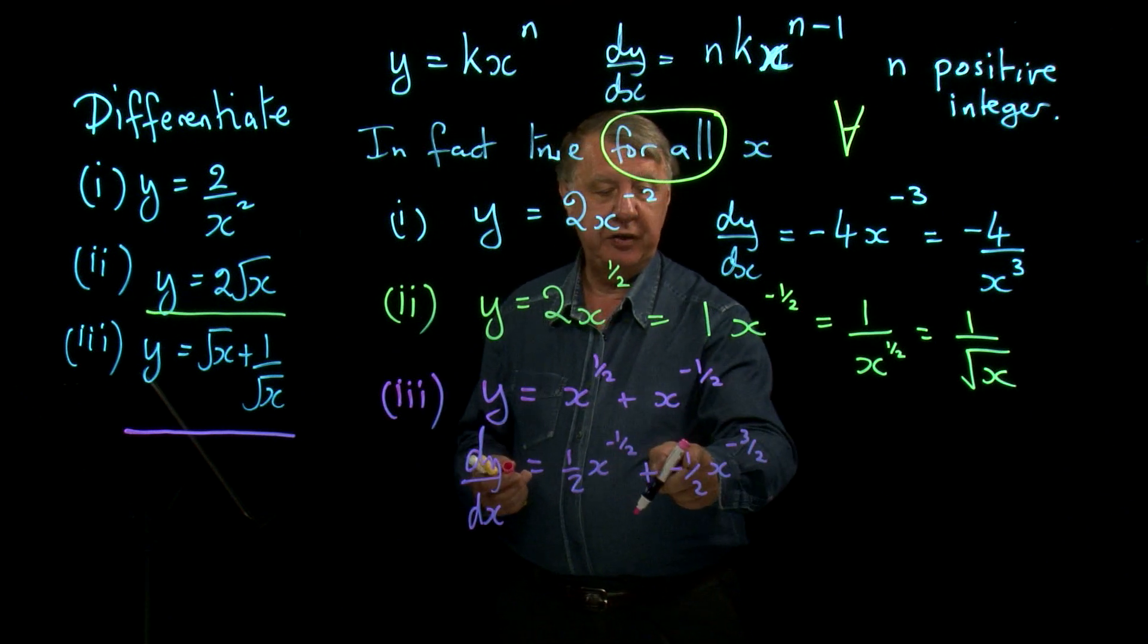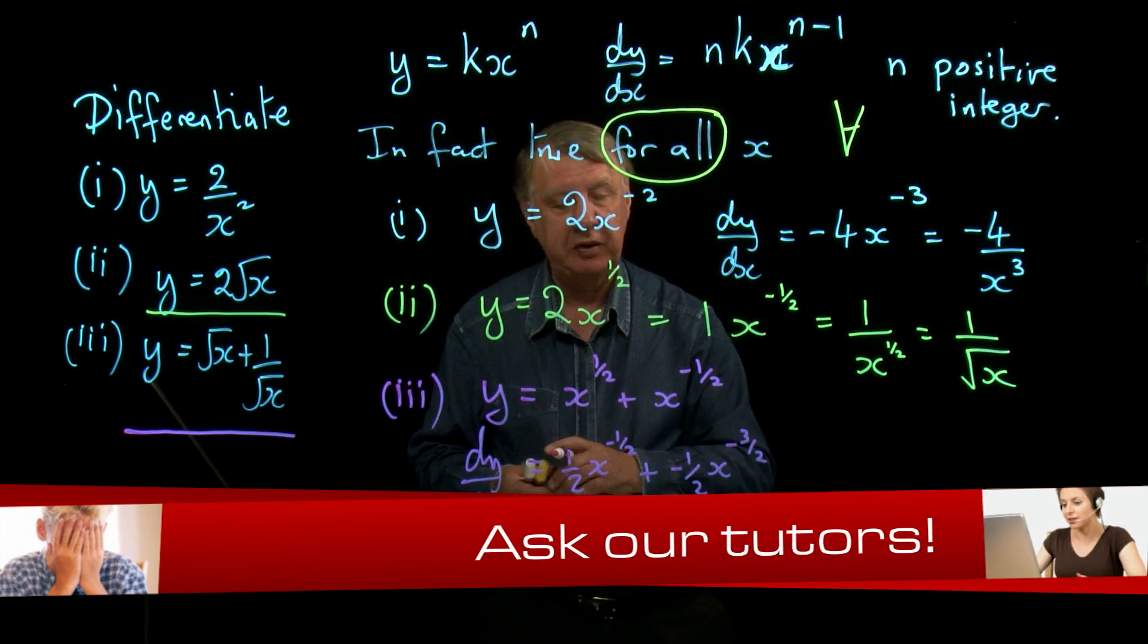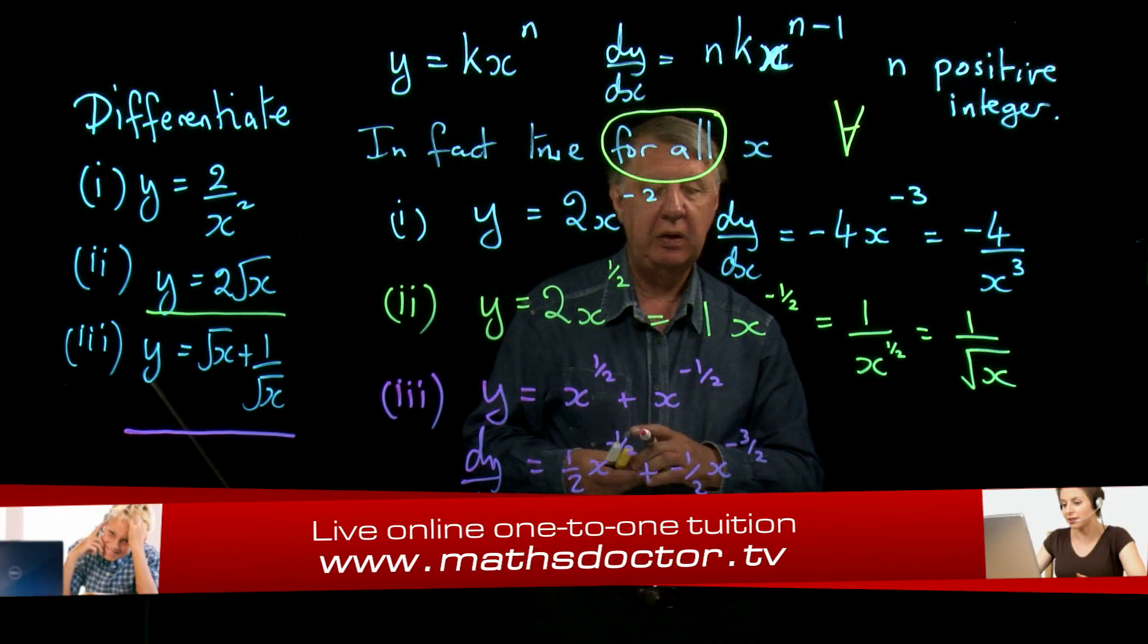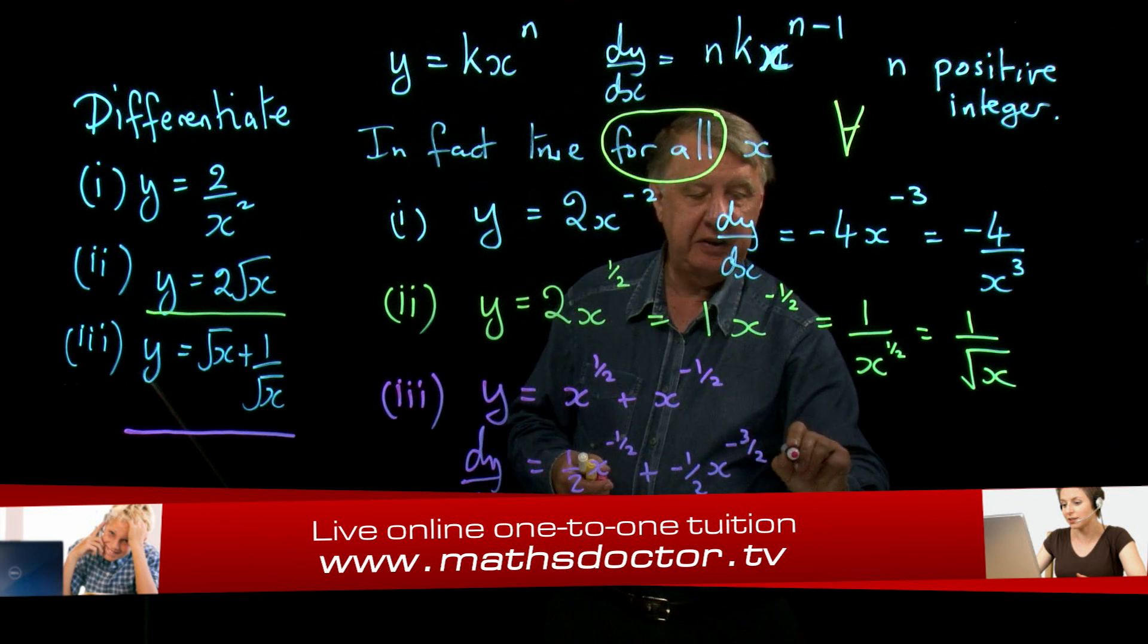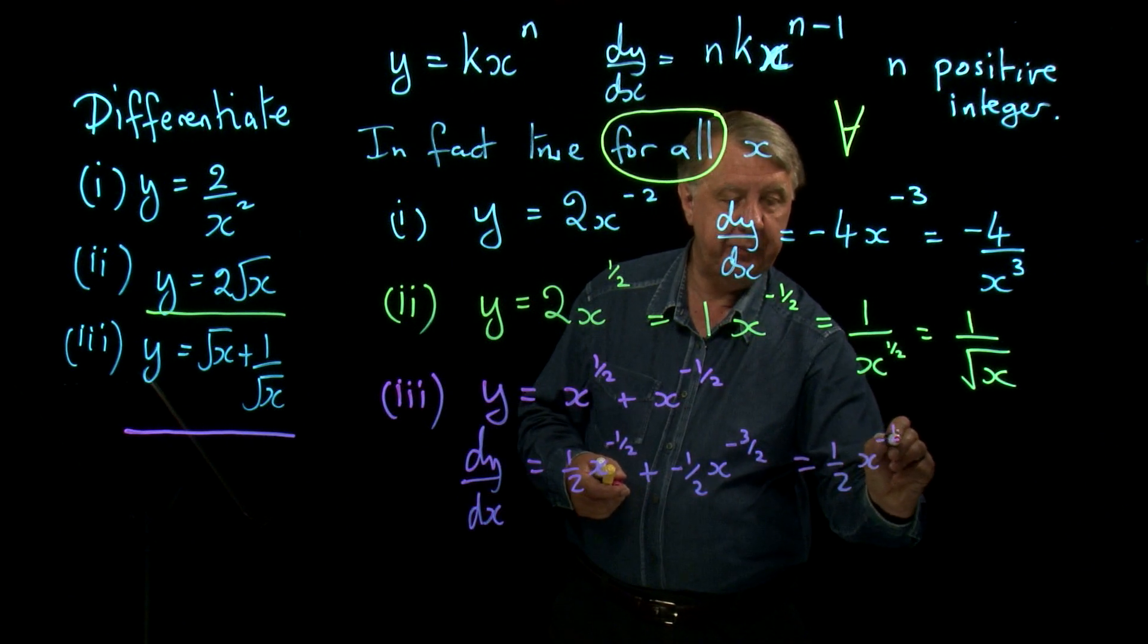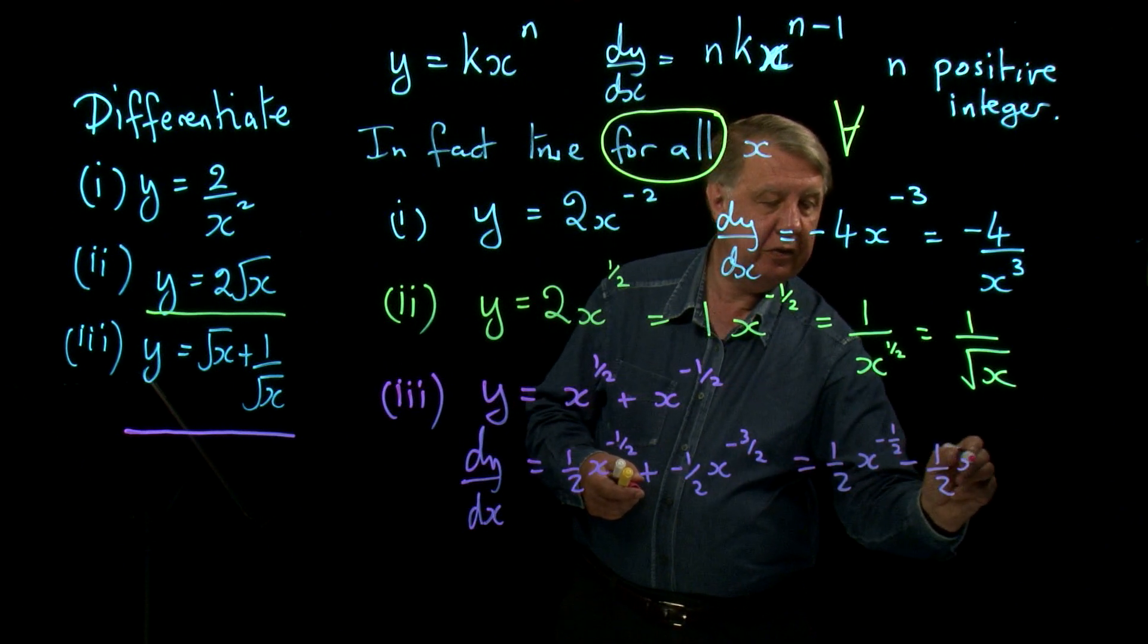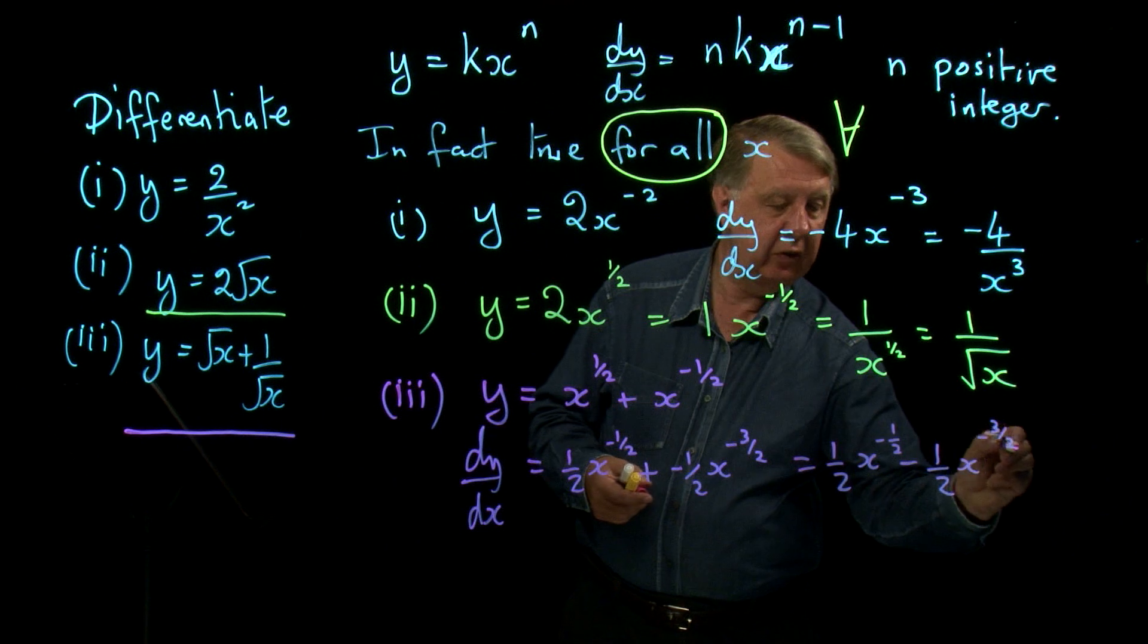Now first of all, of course, we will make this term negative here because we're adding a negative number. And you might like to leave it like that. Half x to the minus a half, minus a half x to the minus 3 over 2.